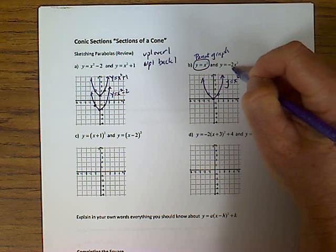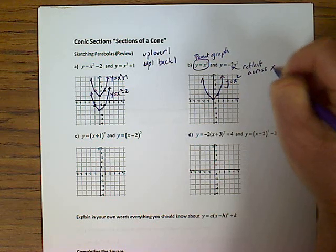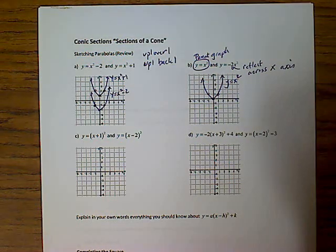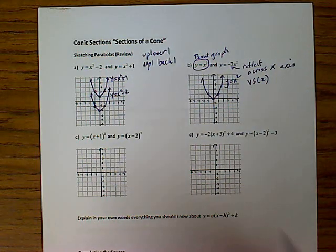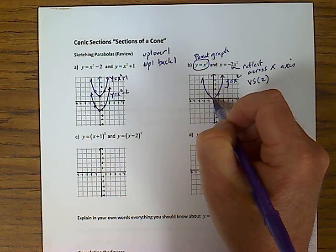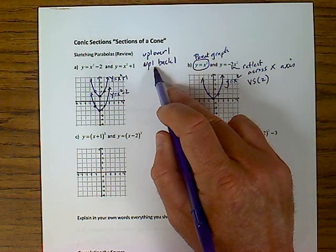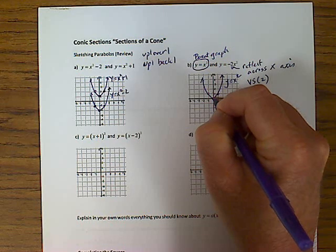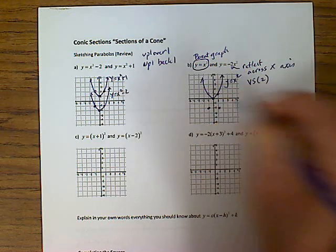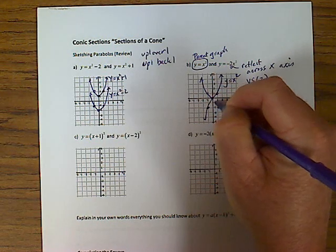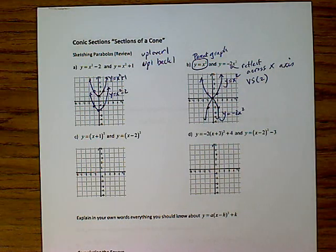For y equals negative 2x squared, we're going to go off of (0, 0), and now instead of going up we'll go down. Instead of going up 1 as the parent graph rule says, we're going to vertically stretch by a factor of 2. So we go down 2, back 1, down 2, over 1. And there you have your y equals negative 2x squared graph.